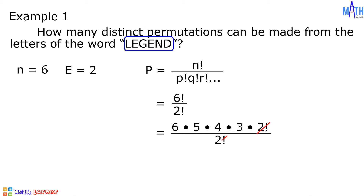Cancel out 2 factorial. We have 6 times 5 times 4 times 3, which is equal to 360. There are 360 different permutations.